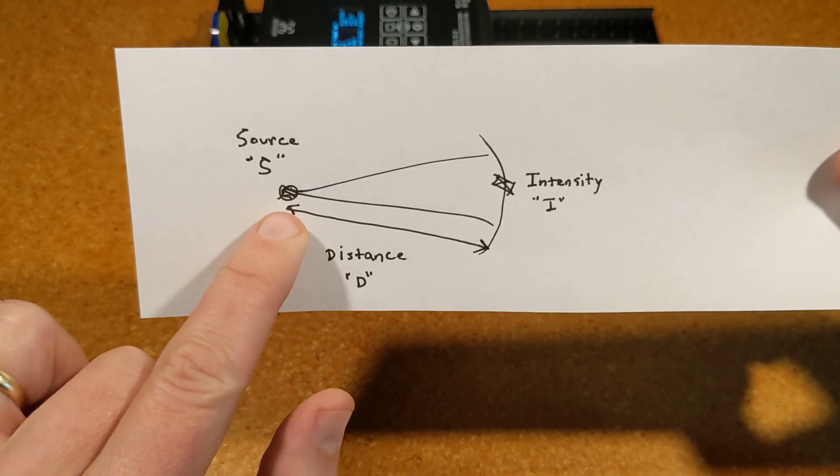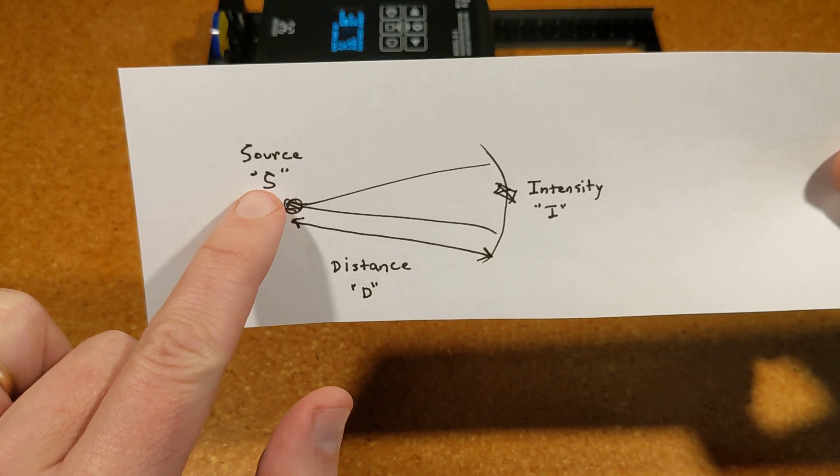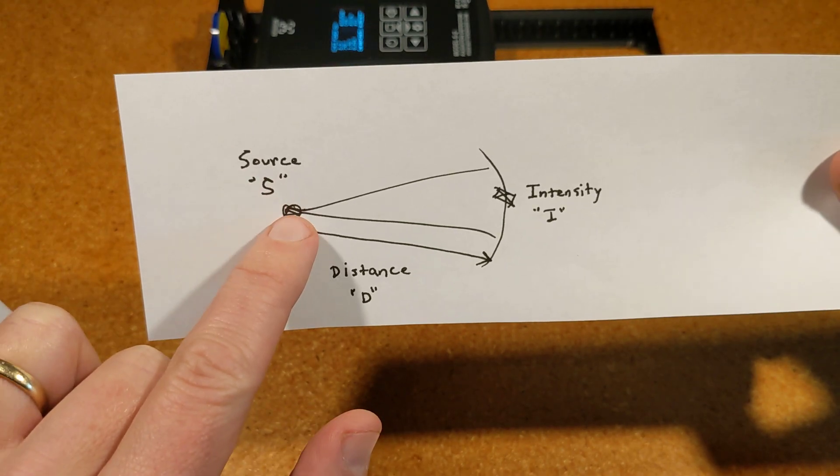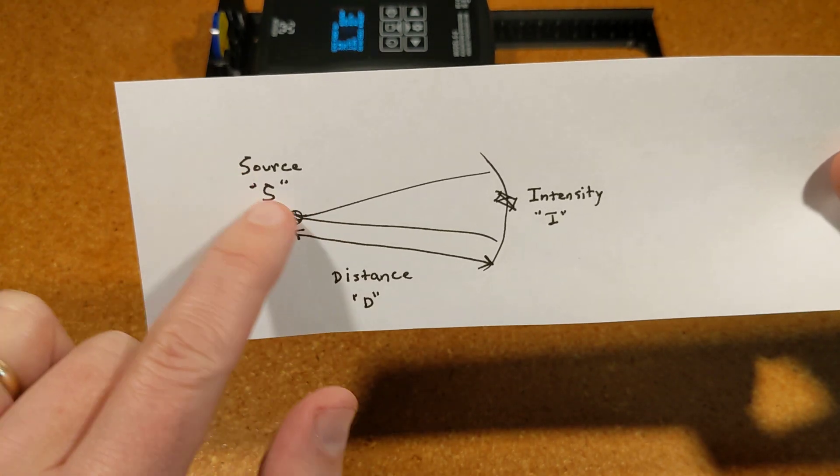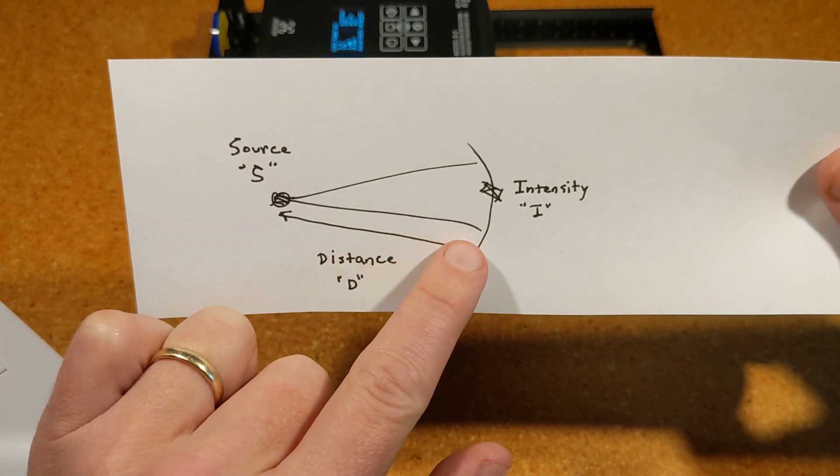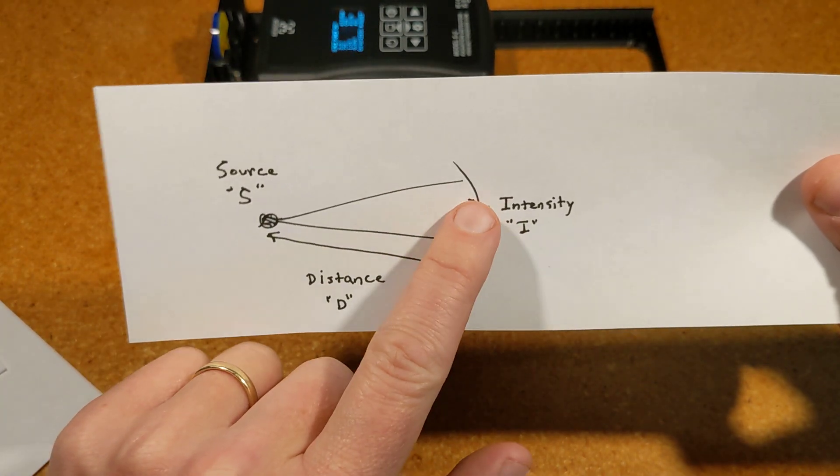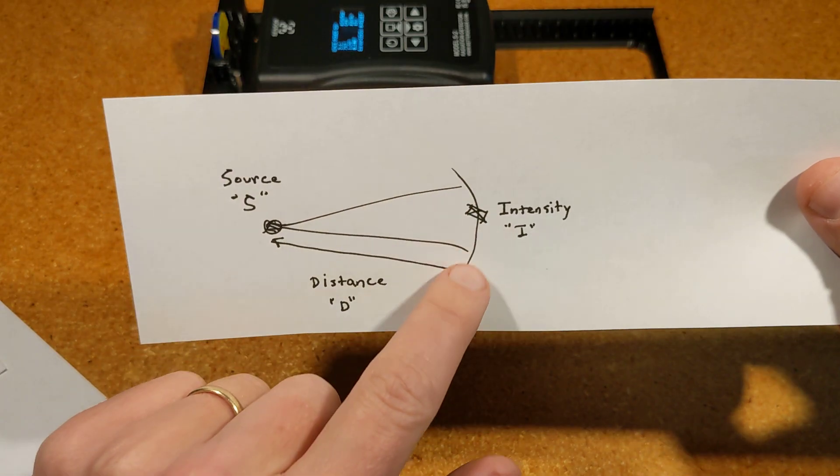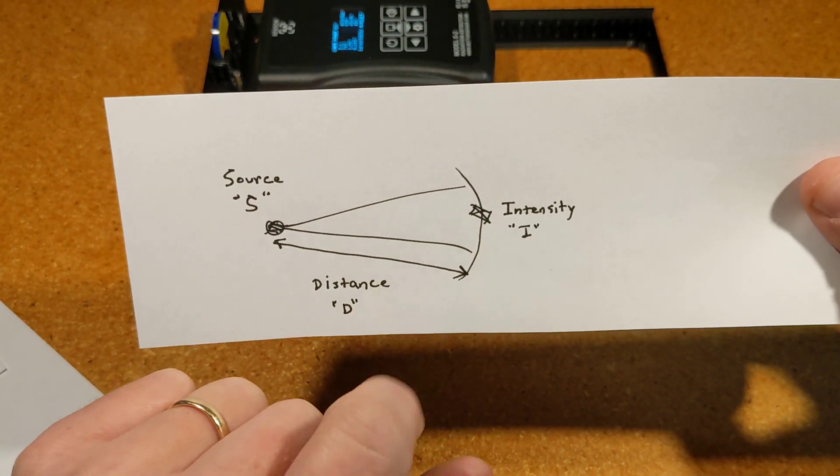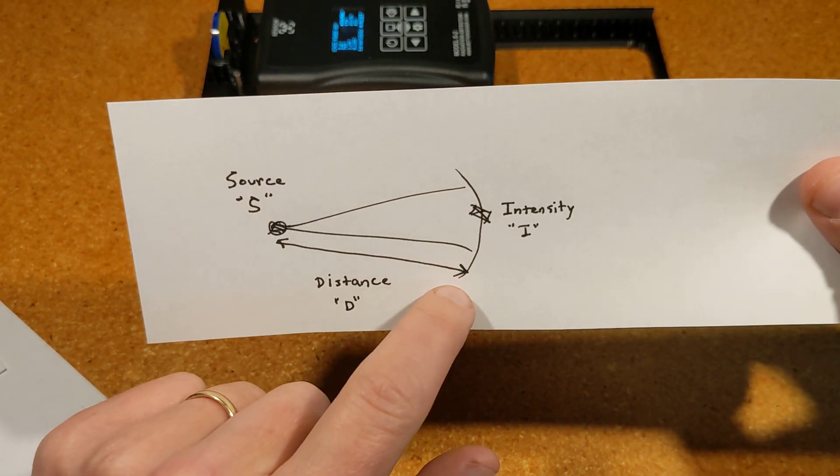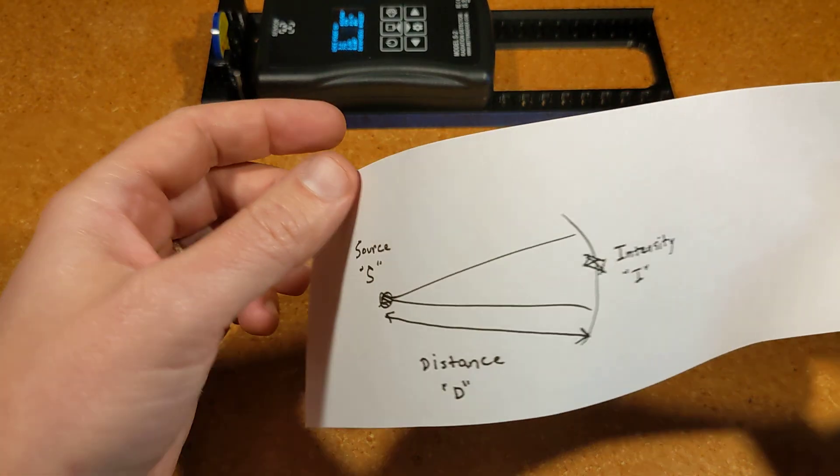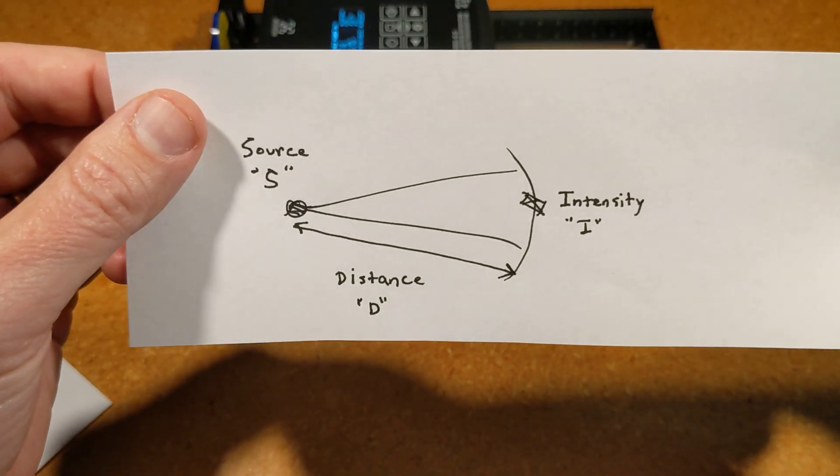I'll change the variables now. I'll call the strength of the source S, the distance is D, and the intensity at some point is I. That's basically decreasing according to the surface area of this sphere around it.